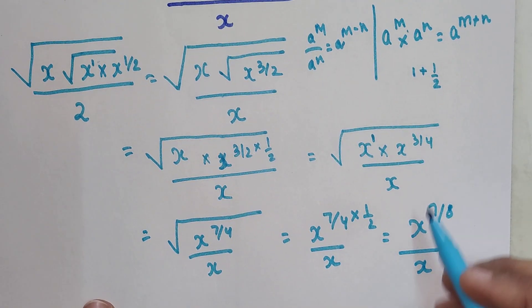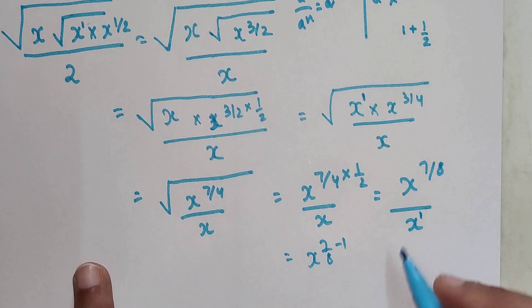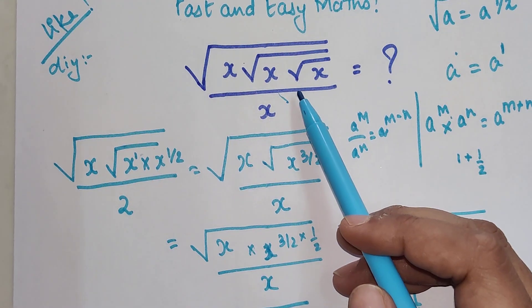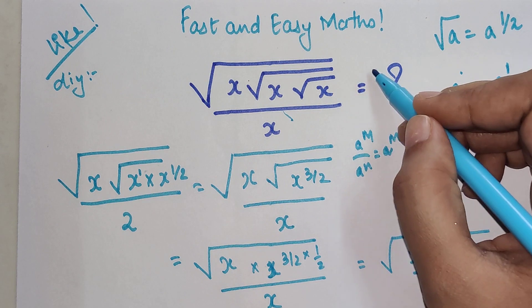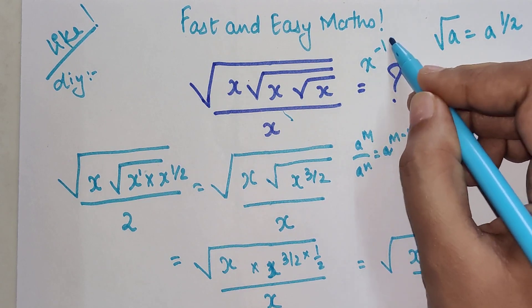So here the index is 1. When you take it on the upper side, you get x raised to 7 upon 8 minus 1. So now the final answer will be x raised to minus 1 upon 8. That is your answer for this particular question.